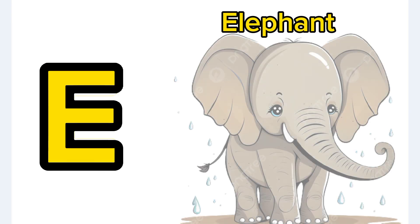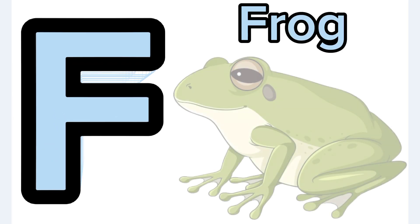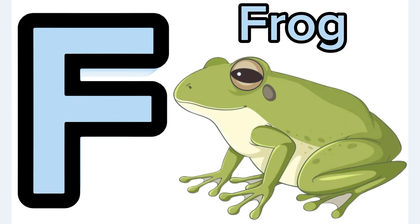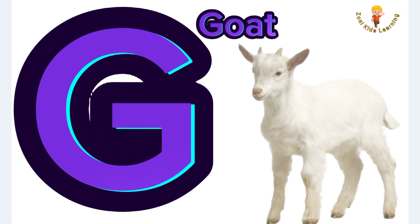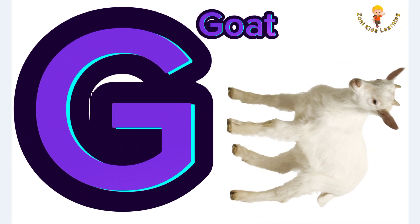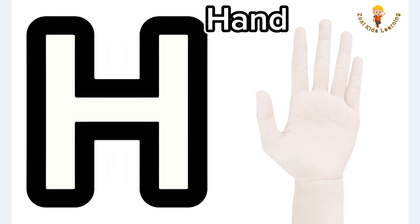E is for elephant, e-e-elephant. F is for frog, f-f-frog. G is for goat, g-g-goat. H is for hand, h-h-hand.